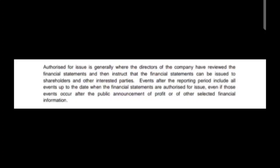What does 'authorized for issue' mean? Authorized for issue is generally where the directors of the company have reviewed the financial statements and then instruct that the financial statements can be issued to the shareholders and other interested parties. Events after the reporting period include all events up to the date when the financial statements are authorized for issue — that is, when the financial statements are prepared, audited, and approved to be presented to shareholders and other concerned parties.